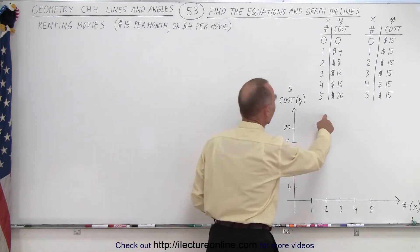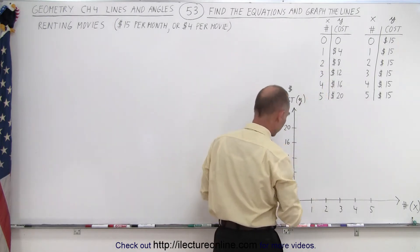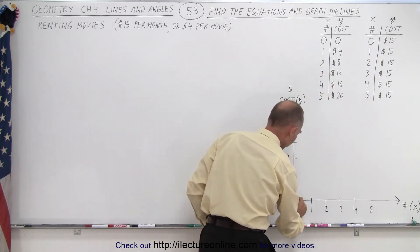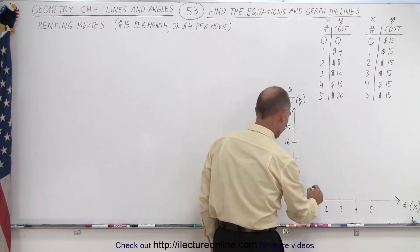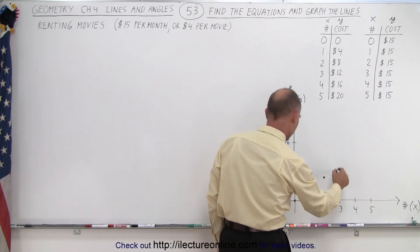Let's first graph this first line and notice we have the point zero, zero which is down here. In other words, you pay zero dollars if you rent zero movies. If you rent one movie, you pay four dollars. If you rent two movies, you pay eight dollars, three movies, twelve dollars.